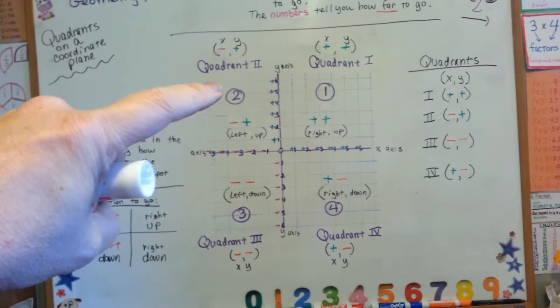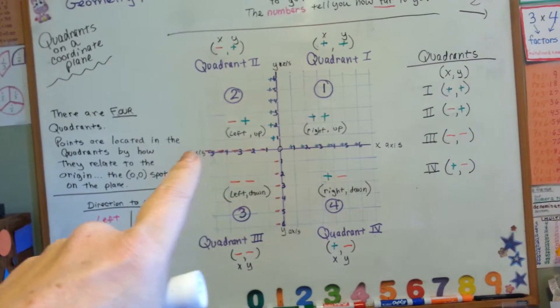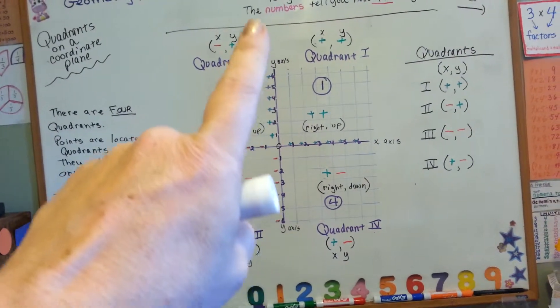For quadrant 2, you go to the left and up. You go 1, 2, 3, 4, 5, 6, and 1, 2, 3, 4, 5, 6.